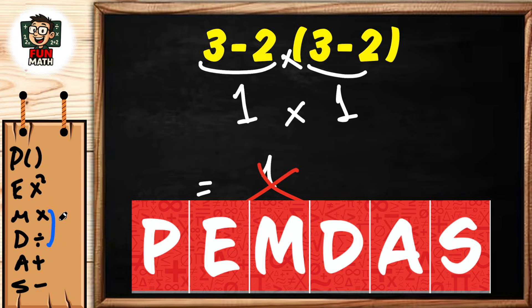These operations are performed from left to right. Similarly, addition and subtraction have no order and are performed from left to right.